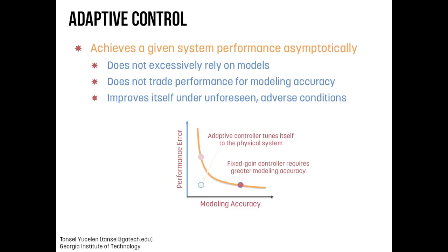Adaptive controllers achieve a given system performance asymptotically without excessively relying on system models, and they do not trade performance for modeling accuracy. As seen in the graph, the adaptive controller achieves the same level of performance as the fixed-gain controller without knowing the system model or requiring modeling accuracy. More importantly, it improves itself under unforeseen adverse conditions — it learns as it flies.